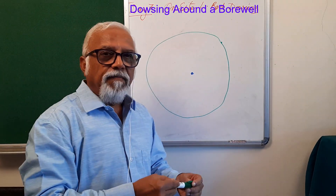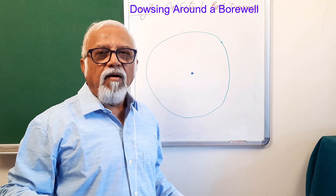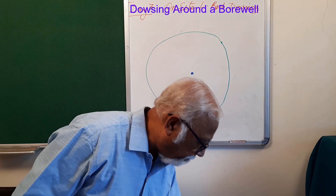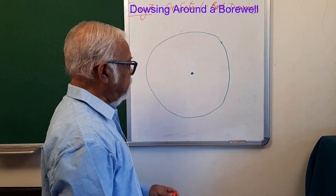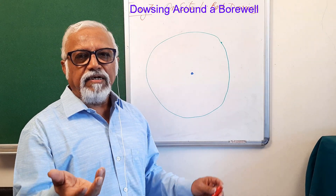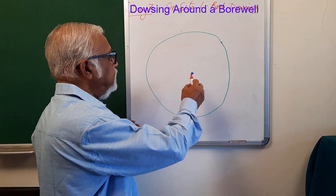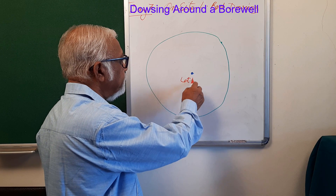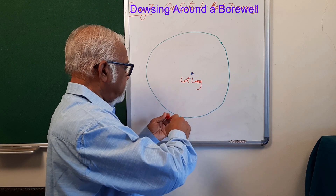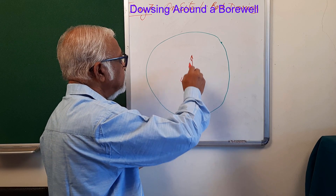You can mark the circle with a stick or whatever marking tool you have available on open land. Now, identify one location. If you have your phone with a compass, orient yourself at this point, locate the GPS — meaning the latitude and longitude of the bore well — and identify the north direction. I am assuming the north direction to be somewhere here.